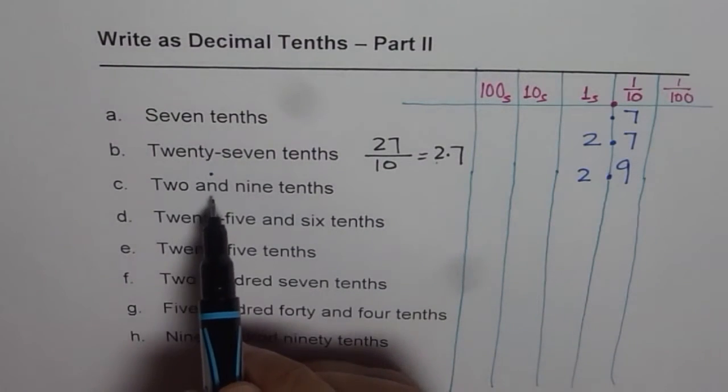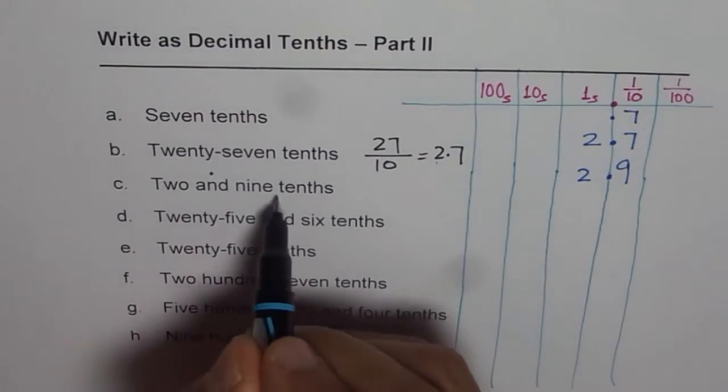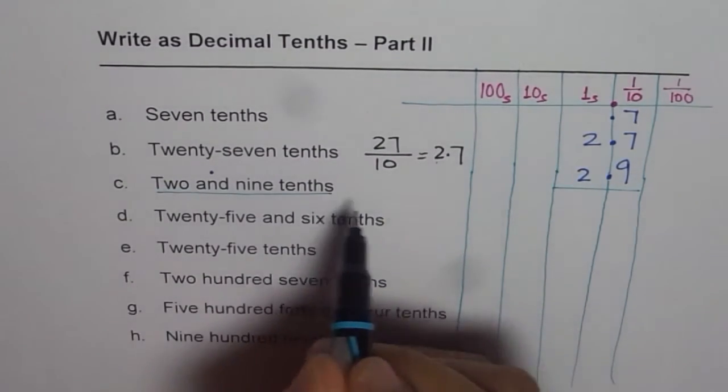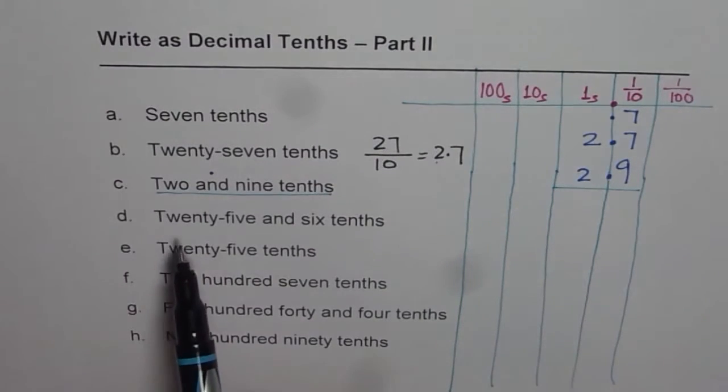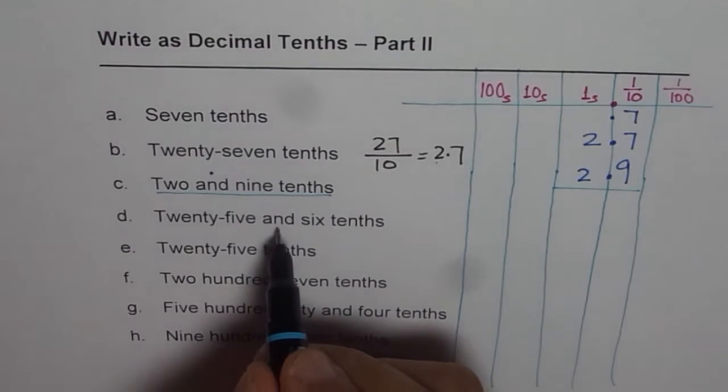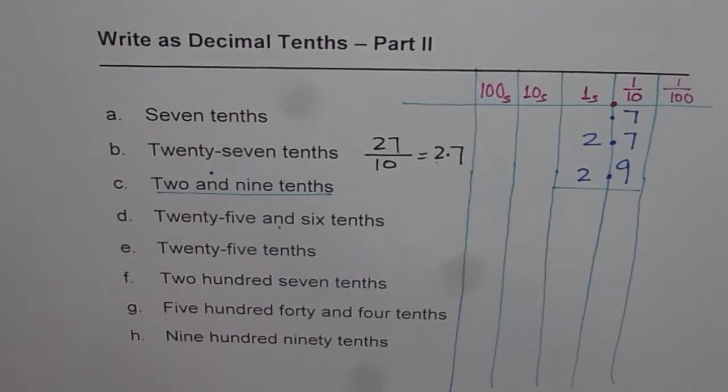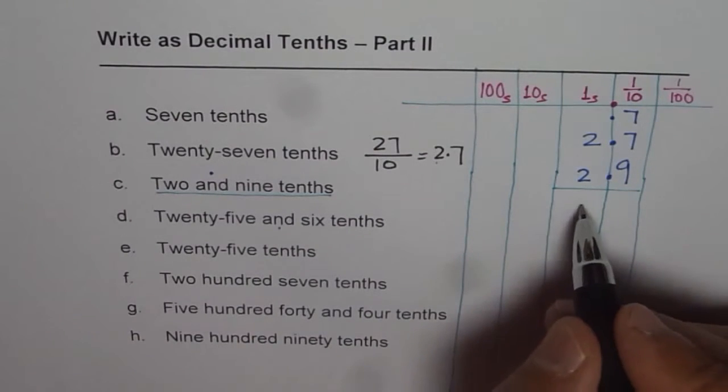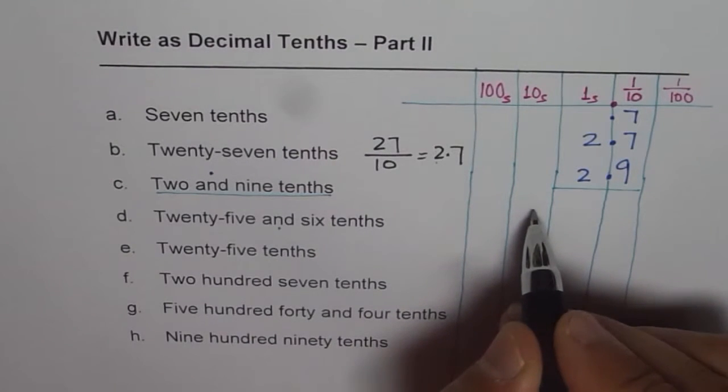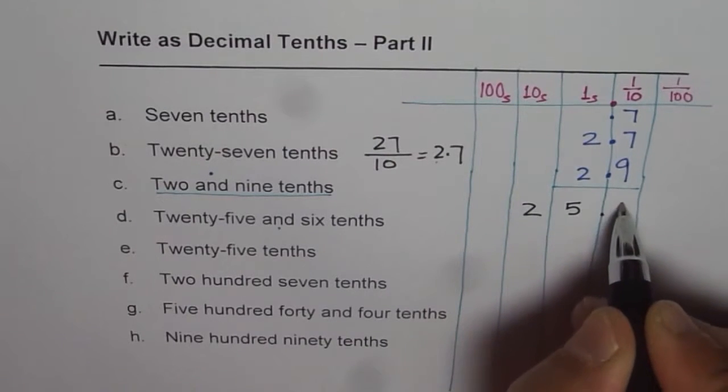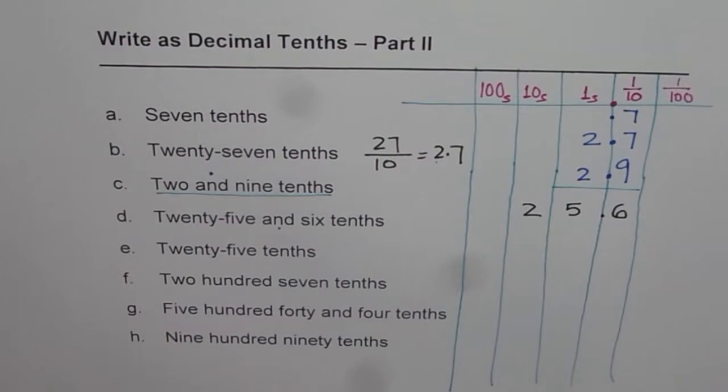We have already done two and nine tenths, which is this. Now you have to do twenty-five and six tenths. 'And' means a decimal point. Twenty-five and six tenths, so twenty-five comes on the left side. We have 25.6. That makes sense.